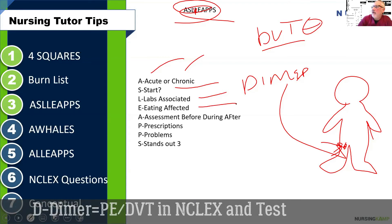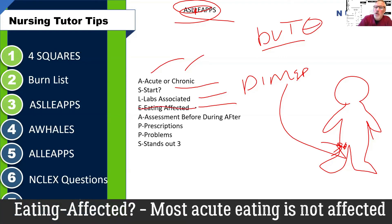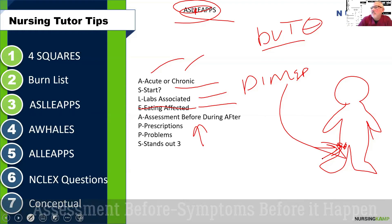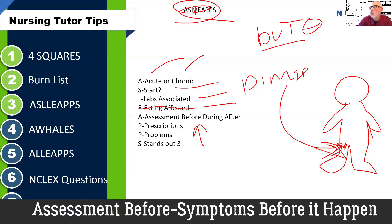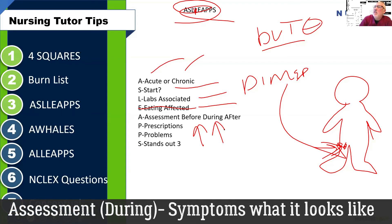Is eating affected by a DVT? Not really, so we move on. What about assessment — what does it look like? Before: the patient may have been on a long plane ride or drove cross-country. During: they present with pain in the calf, warmth, erythema, and ipsilateral pain.